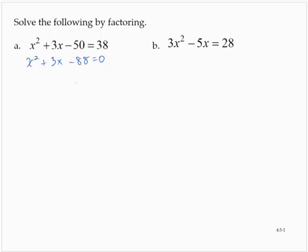So now I'm going to use the AC idea. We'll do that work in a different color here. We'd have 1 times negative 88 is negative 88. So we need a pair of numbers that multiplies to negative 88 and adds to positive 3.